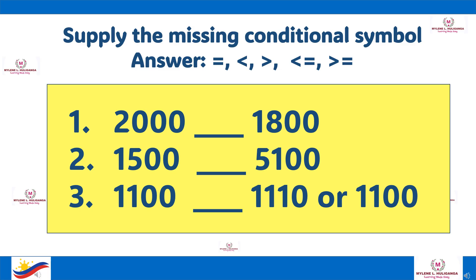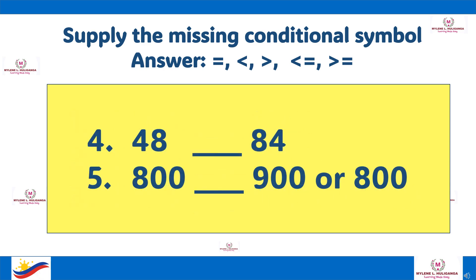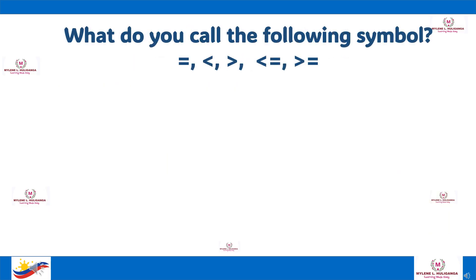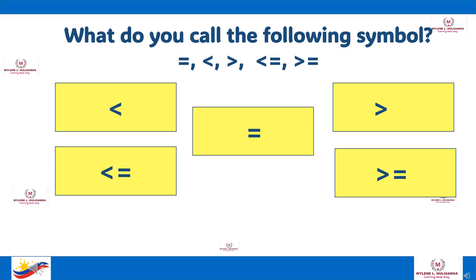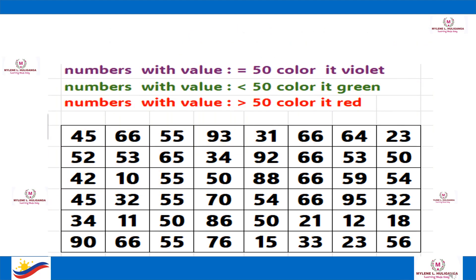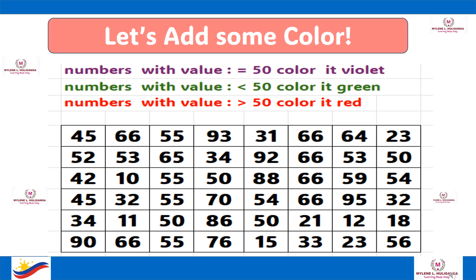Supply the missing conditional symbol. Answer it with: Equal, Greater Than, Less Than, Greater Than or Equal To, Less Than or Equal To. Let's add some color: color with violet all numbers equal to 50, color with green all numbers less than 50, and color with red all numbers greater than 50.